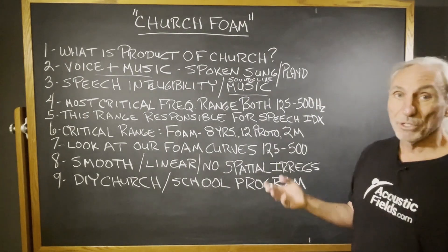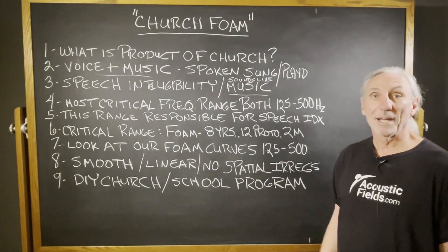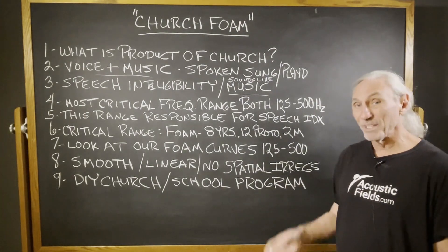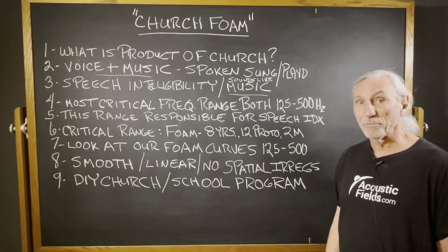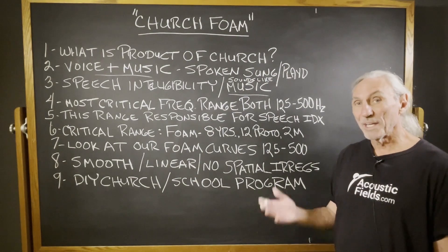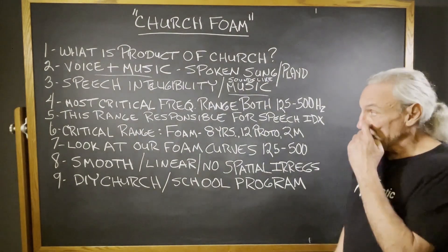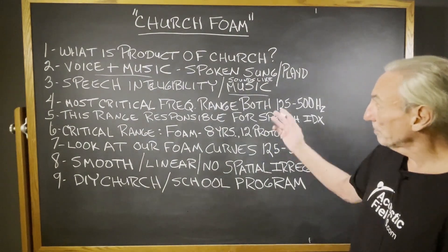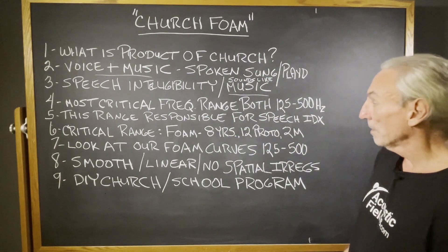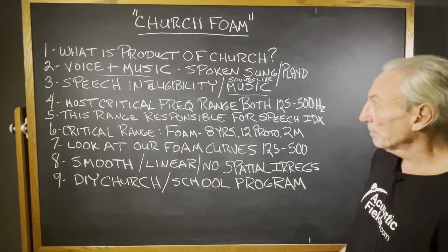Most churches we see in the analysis we run are in the 40s and 50s — well below target. To get intelligibility up to 80%, we manage the reflections off the surface areas with absorption.